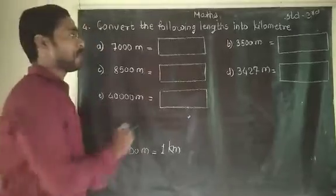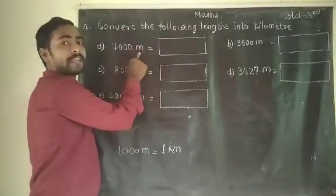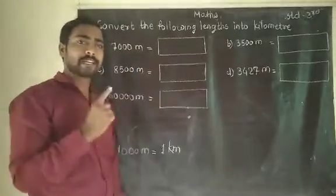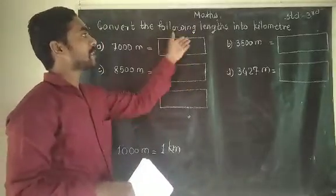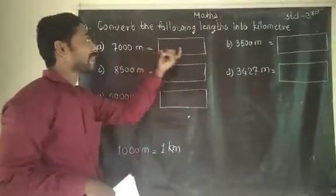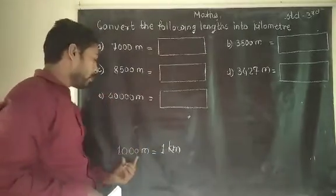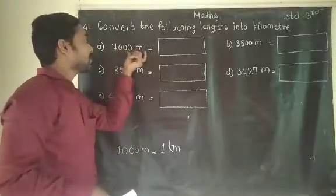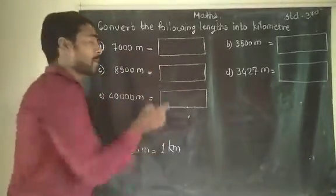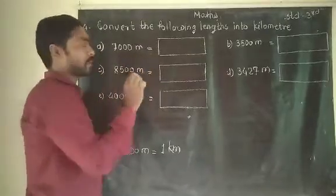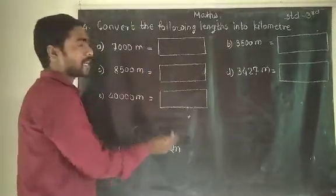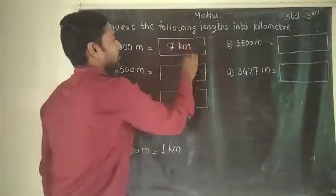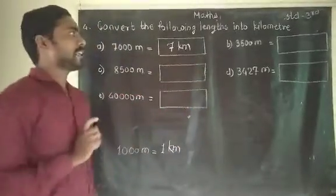Our first example: how many meters? 7000 meters. So we are converting this length into kilometers. 7000 meters means 7 kilometers — because 1000 meters make 1 kilometer, so 7000 meters makes 7 kilometers. The answer for part (a) is 7 kilometers.